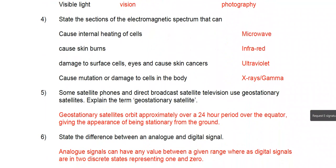State the section of the electromagnetic spectrum that can cause: internal heating of cells — microwaves. Skin burns — infrared. Damage to surface cells, eyes, and can cause skin cancers — ultraviolet. Mutation and damage to cells in the body — X-rays and gamma.